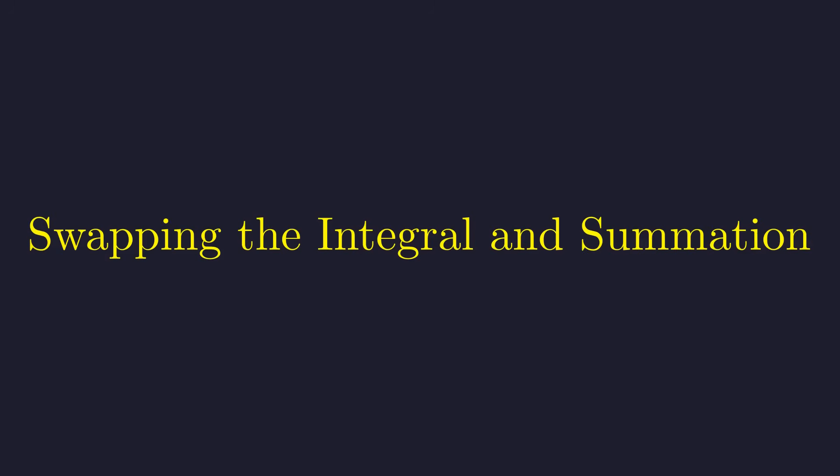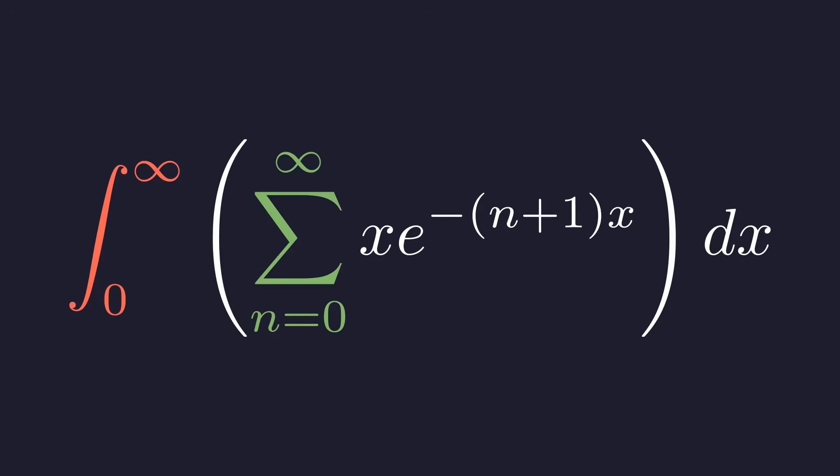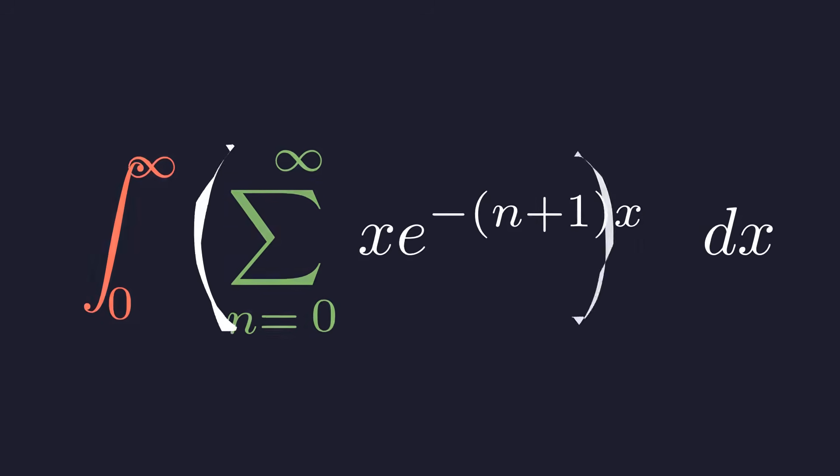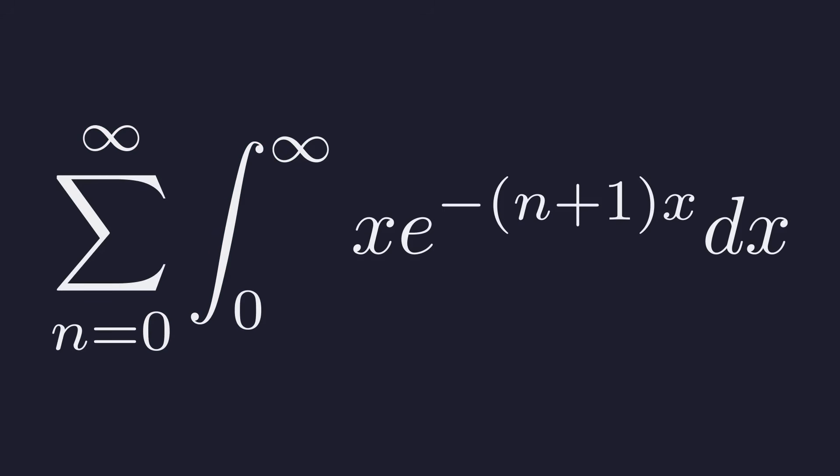Now let's plug this back into the integral. And here's where something really cool happens. We're now integrating an infinite sum. There's a theorem that says when a series converges nicely enough, you're allowed to swap the integral and the sum. This is the move that cracks the whole problem open. After swapping, we have a sum of integrals. Each one is way simpler than what we started with.